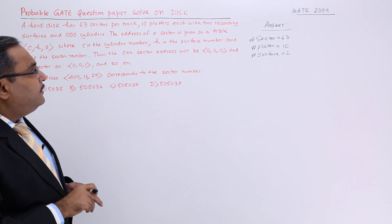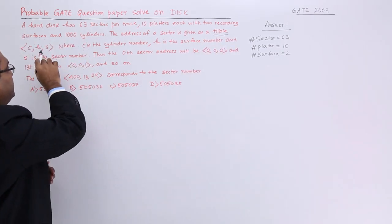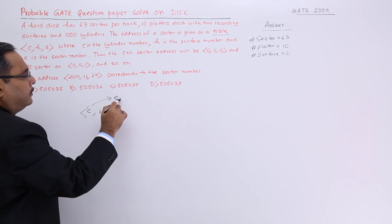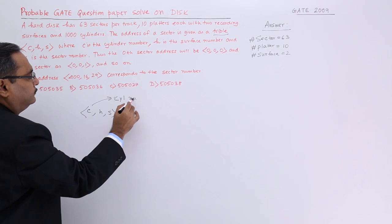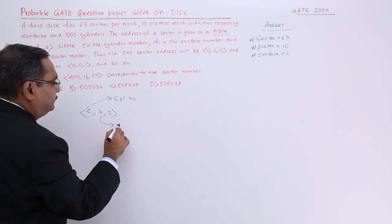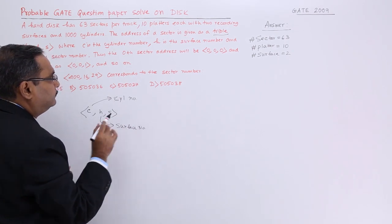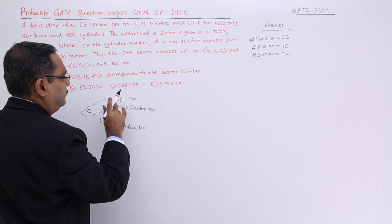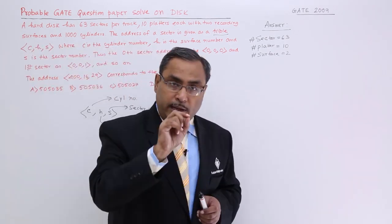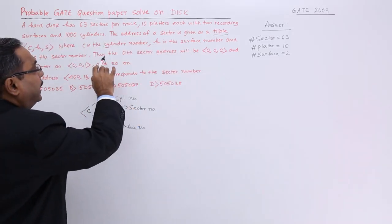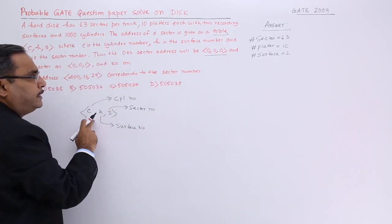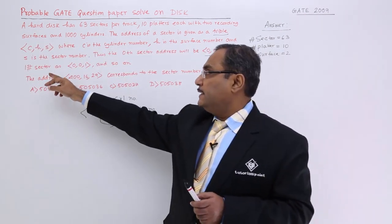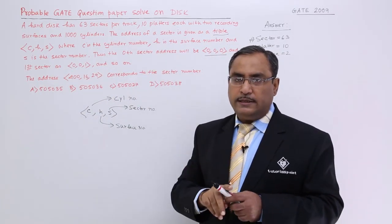The address of a sector is given as a triple — C, H, S — where C is the cylinder number, H is the surface number, and S is the sector number. Thus, the zeroth sector will be written as (0, 0, 0), that means cylinder number 0, surface number 0, and sector number 0. The first sector will be denoted as (0, 0, 1), and so on.